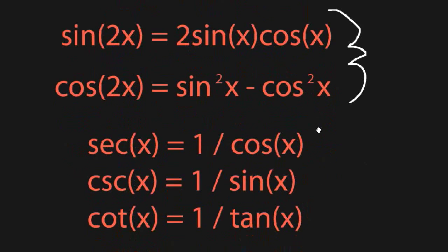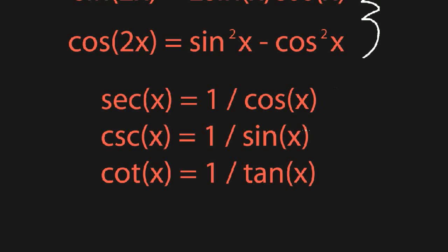There are also three more functions to be aware of: secant, cosecant, and cotangent. These are reciprocal functions — secant is 1 over cosine, cosecant is 1 over sine, and cotangent is 1 over tangent. You don't need to know as much about these as the basic functions, but you should recognize them as reciprocals. Hopefully that's enough to refresh you on trigonometry — thanks for watching and I'll see you next time.